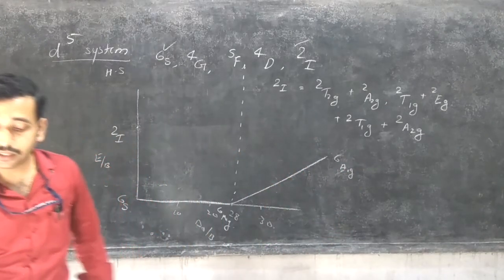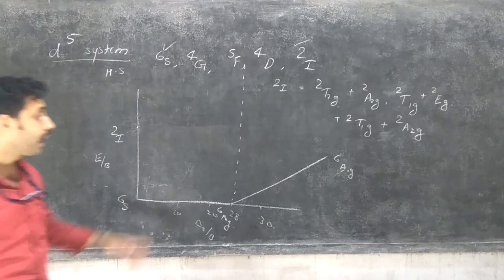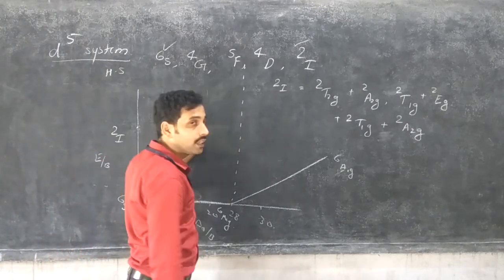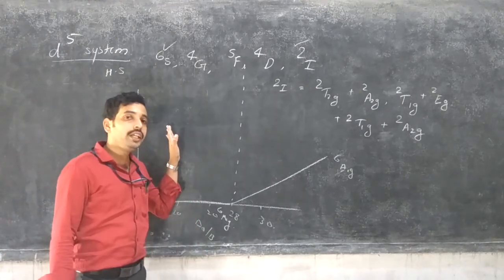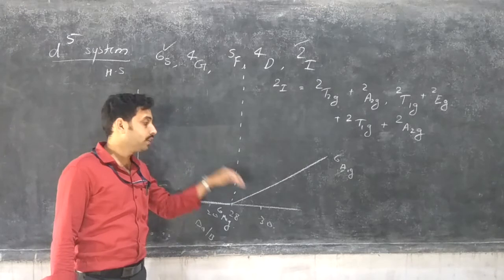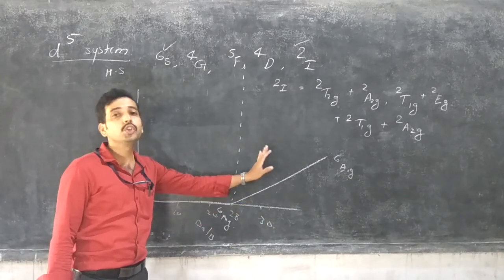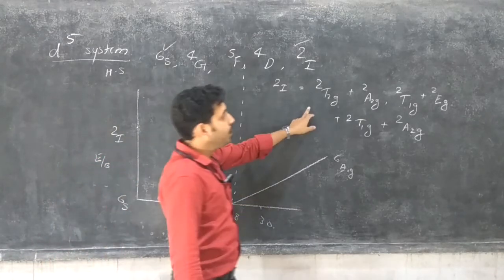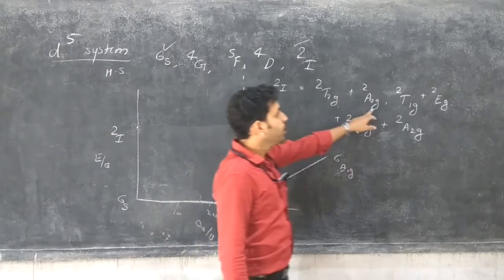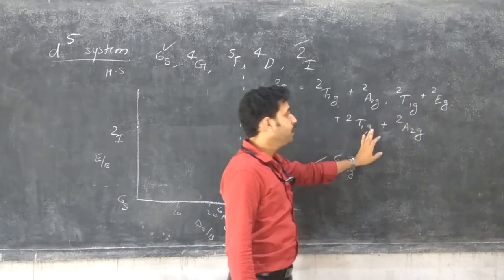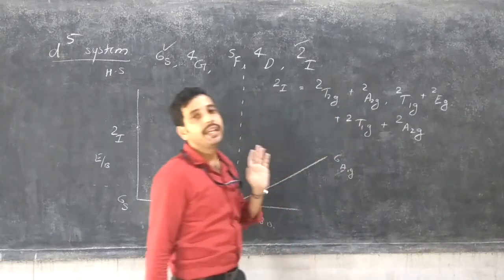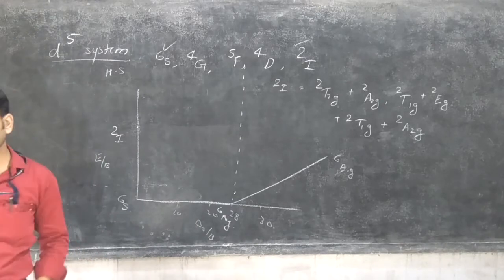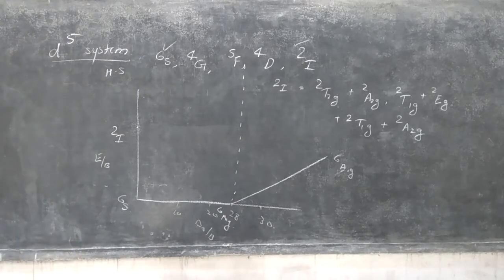In high spin complexes, 2I is at maximum energy and goes to the lowest energy in the case of low spin complexes. The terms 2T2G, 2A2G, 2EG, 2T1G, and 2A2G are involved in the 2I system.